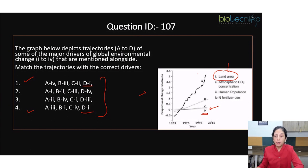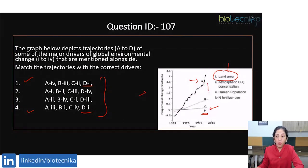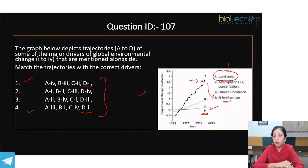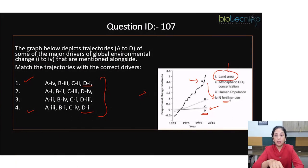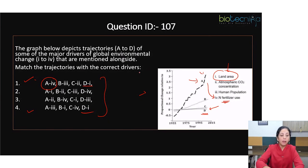Looking at another trajectory where a significant, drastic change has been shown — this could be for fertilizer use. We know that post the Green Revolution that happened in 1960, there has been excessive use of fertilizer for agriculture. So here we can match trajectory A with fertilizer use. That leads us toward option 1 as our correct answer.